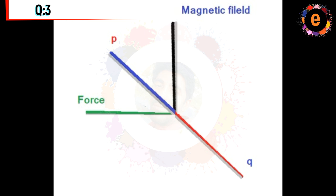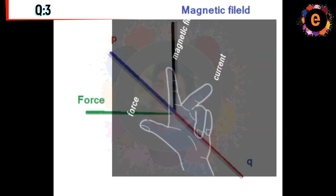Looking at the figure, you can see a slight direction indicated. This is the middle finger of the hand rule applied to the screen. The current is out of the screen, and the answer is Q.